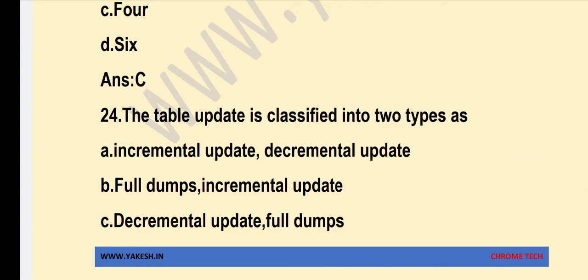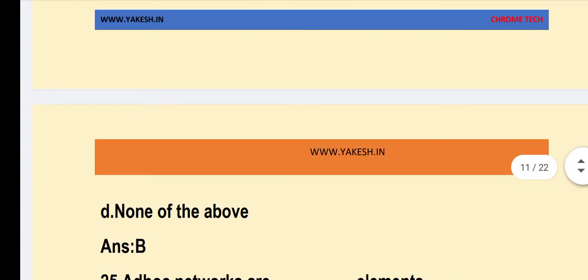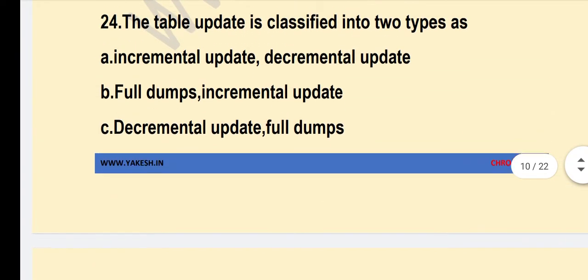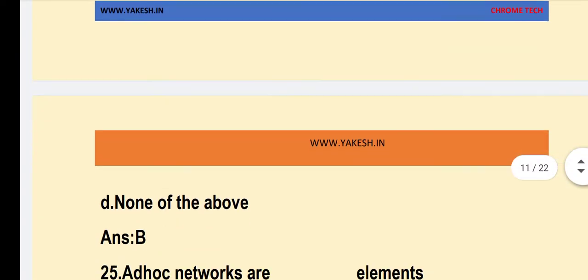The table update is classified into two types. Option B is the correct answer — full dumps and incremental update.